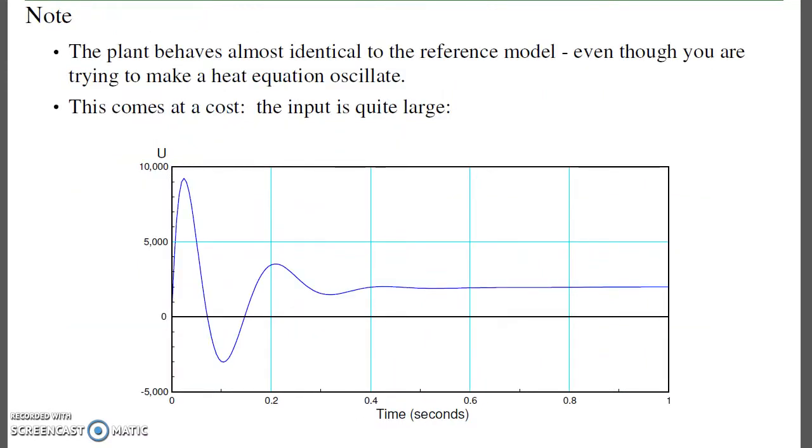And you can see that if I look at the control input, this is what's happening. The input slams high, almost at 10,000, then goes low, then high, then low. To get that kind of response, I need a lot of control input.